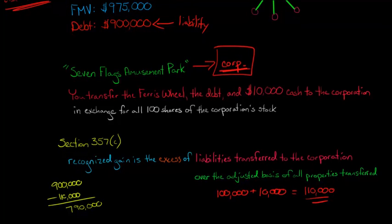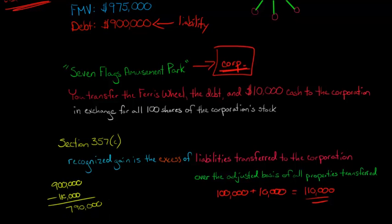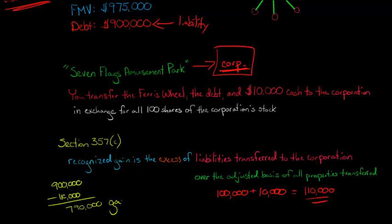What that means is that we have transferred so much debt to this corporation that it actually exceeds the adjusted basis of all the property we're transferring by $790,000. So we are going to have a recognized gain — even though generally the liabilities are not going to trigger any kind of gain, in this situation where the liabilities actually exceed the adjusted basis of the properties being transferred, we're going to recognize a gain and be taxed on $790,000.